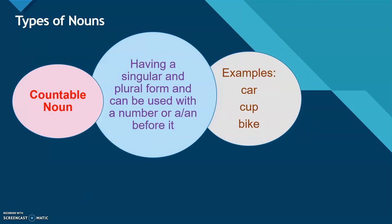Countable noun. Having a singular and plural form, and can be used with a number, or a, or an before it. For example: a car, a cup, and a bike. In English grammar, countable nouns are individual people, animals, places, things, or ideas which can be counted.